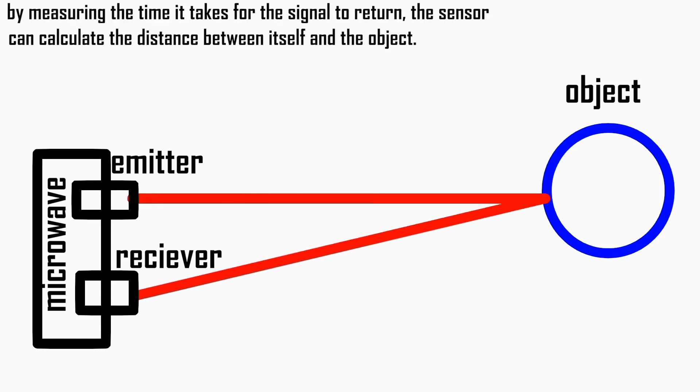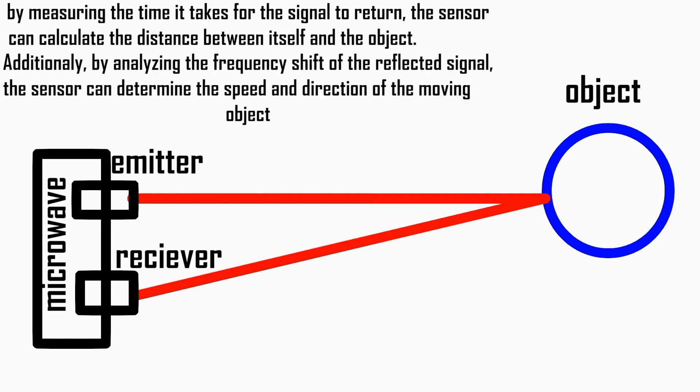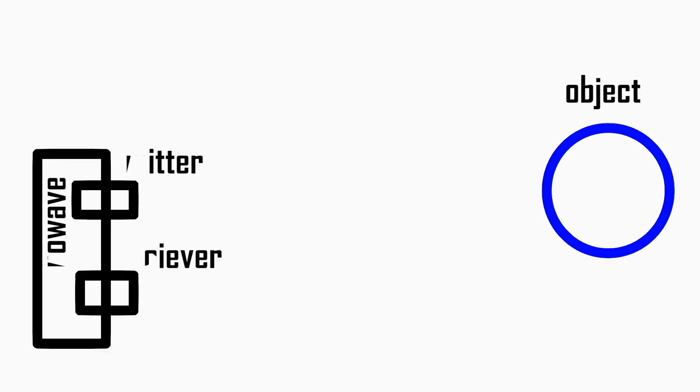Additionally, by analyzing the frequency shift of the reflected signal, the sensor can determine the speed and direction of the moving object.